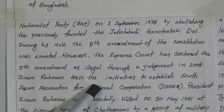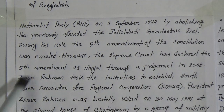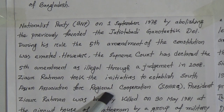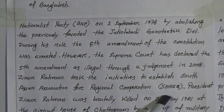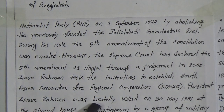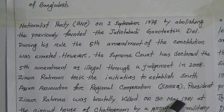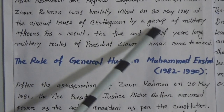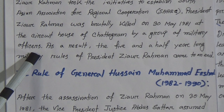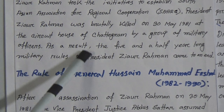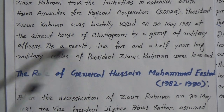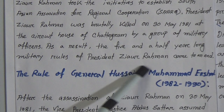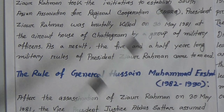Ziaur Rahman took the initiative to establish the South Asian Association for Regional Cooperation, or SAARC. President Ziaur Rahman was brutally killed on 13th May 1981 at the circuit house of Chattogram by a group of military officers. As a result, the five-and-a-half-year-long military rule of President Ziaur Rahman came to an end.